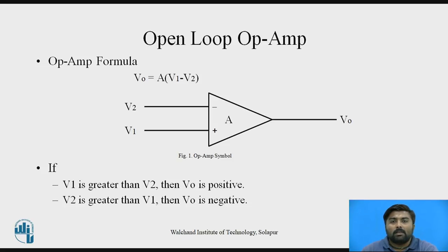V1 is connected to the plus terminal and V2 is connected to the minus terminal. If V1 is greater than V2, then VO is positive. And if V2 is greater than V1, then VO is negative.